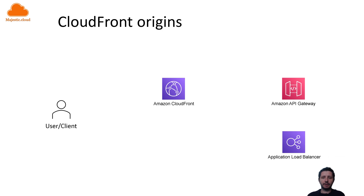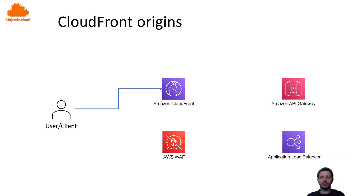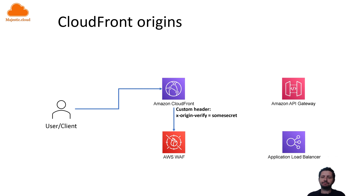That is pretty simple to fix. We are going to introduce another piece of infrastructure called AWS WAF. I've done a video on AWS WAF before and I'll link it here. How this works: the user sends the request to the CloudFront network, and CloudFront will add a custom header called x-origin-verify with some secret value. CloudFront then sends this request to WAF, and WAF will check for this secret header — if it has this header, it will forward the request to the API gateway or load balancer.